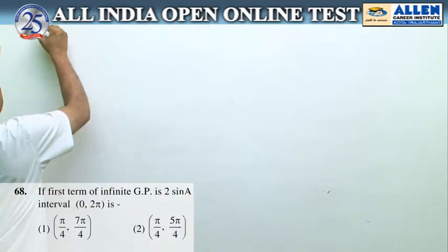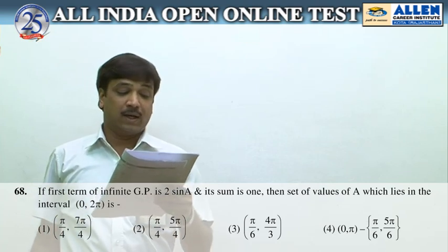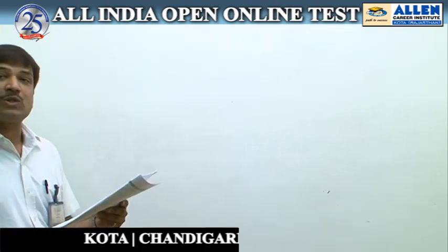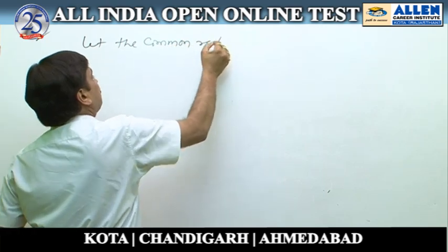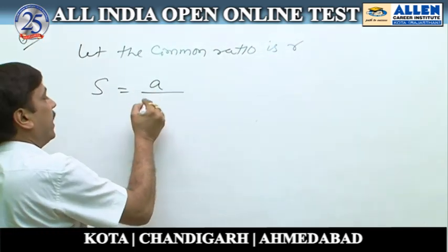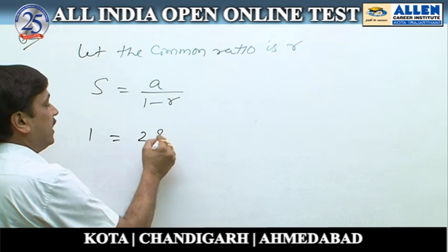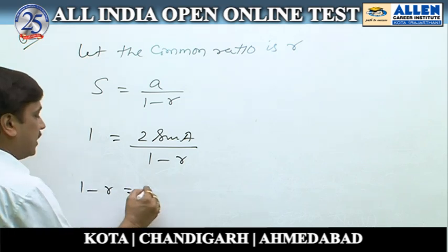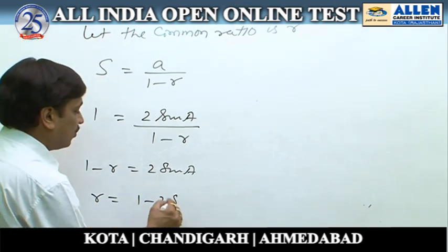Question number 68: it is given that the first term of an infinite GP is 2 sin α and its sum is 1. We are to find the set of values of α in the interval [0, 2π]. Let the common ratio be r. The sum of an infinite GP is S = a/(1 − r). Setting S = 1 and first term = 2 sin α, we get 1 − r = 2 sin α, so r = 1 − 2 sin α.